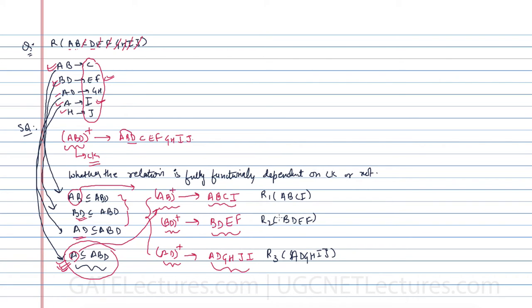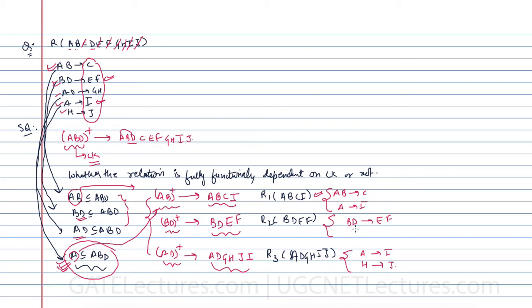Now we identify the functional dependencies applicable to each relation. For R1: AB determines C, and A determines I are applicable. For R2: BD determines EF is applicable. For R3: A determines I, H determines J, and AD determines GH are applicable.